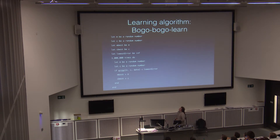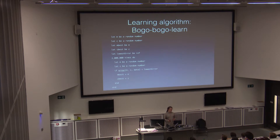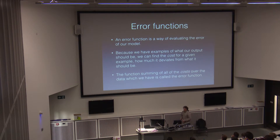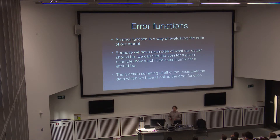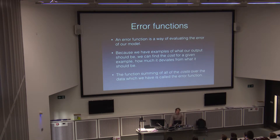We need some way to evaluate the error, because we'd like to know how far we are from approximating the function. We'd actually like to have some way to inform how we're going to learn these parameters. So the key is the error function — we need a way of evaluating the error of our model. When we have the data and we have our parameters, we want to be able to say: I'm this far from the true prediction, I have this value of error. The error for an individual item of data is called the cost, and the error function is the cost summed over all items of data that we have.